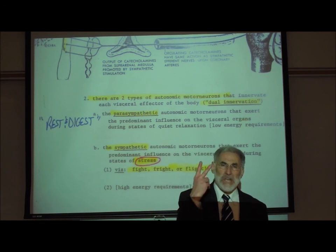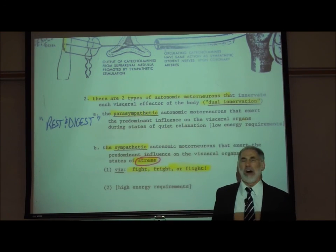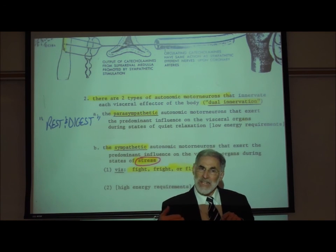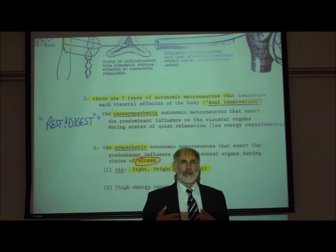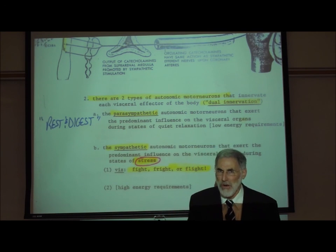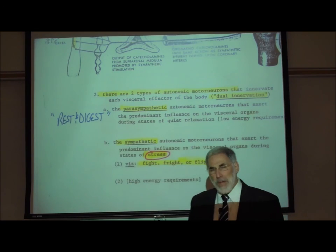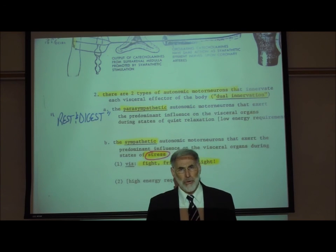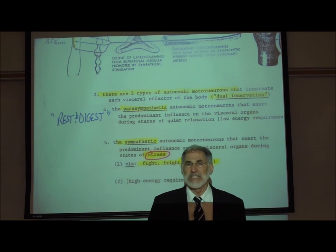There are actually two types of autonomic motor neurons: parasympathetic autonomic motor neurons and sympathetic autonomic motor neurons. In general, both parasympathetic and sympathetic autonomic motor neurons innervate every internal organ — every visceral effector of the body. Because all of our internal organs like the heart and the stomach are innervated by both a parasympathetic and a sympathetic autonomic motor neuron, we commonly describe this as dual innervation. The parasympathetic autonomic motor neurons primarily exert their influence on the internal organs during states of rest and/or eating, commonly known as the rest-and-digest state.